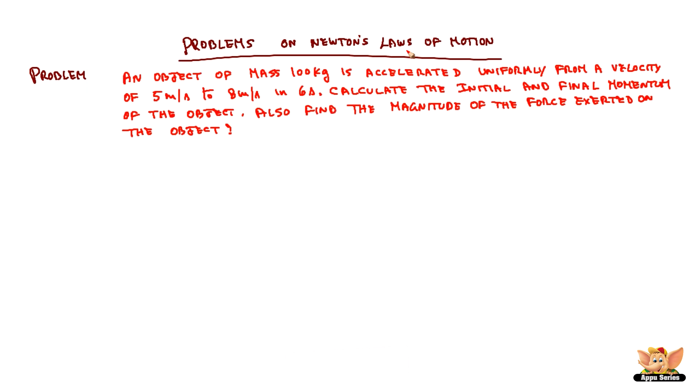So now we know it's a pretty simple problem. We will say the given data is: the mass of the object m is 100 kg and it has an initial velocity u of 5 m per second and final velocity v as 8 m per second and this change of velocity took place in a time t of 6 seconds.